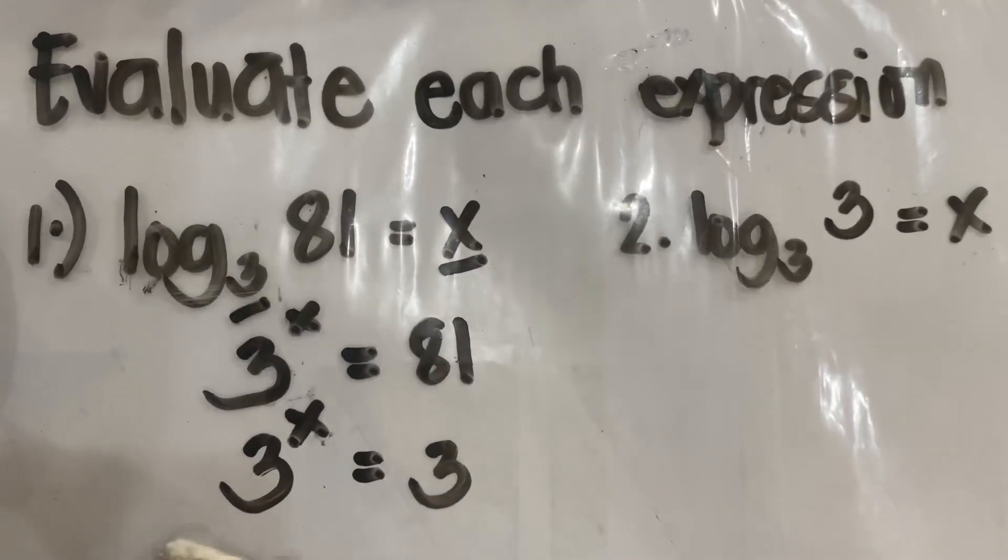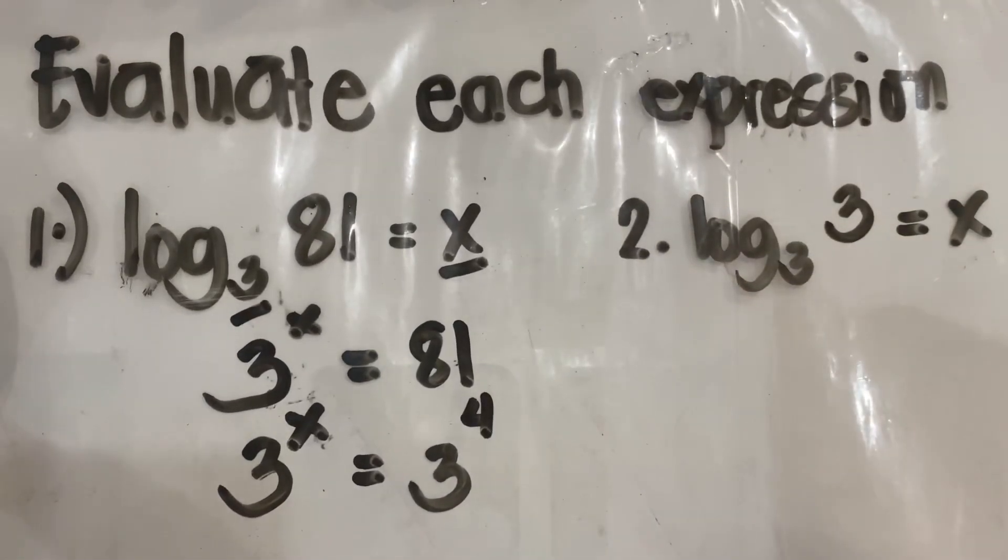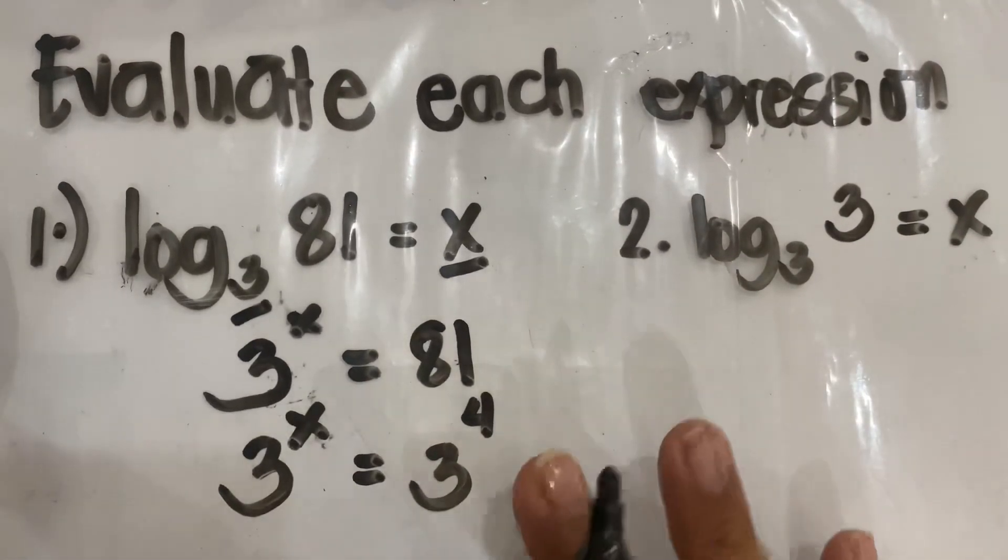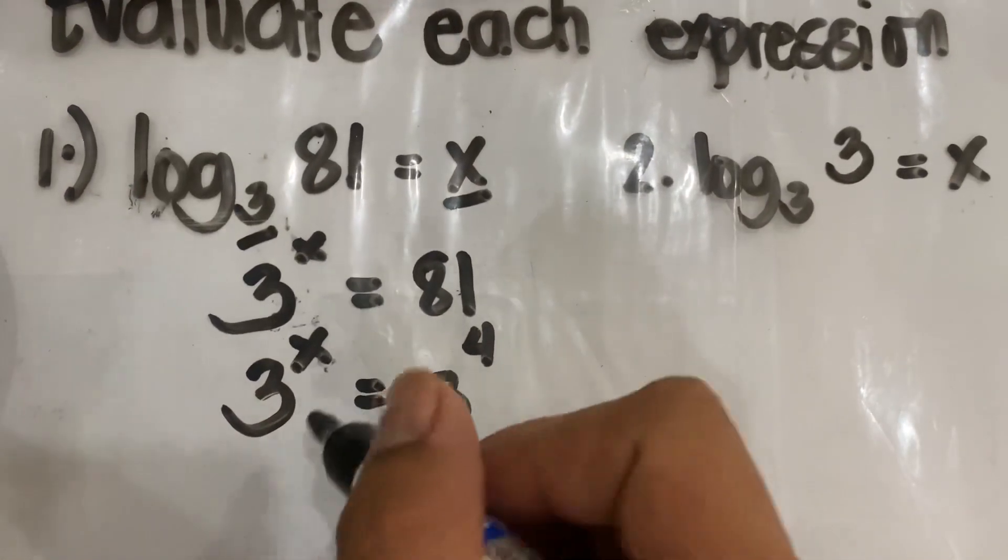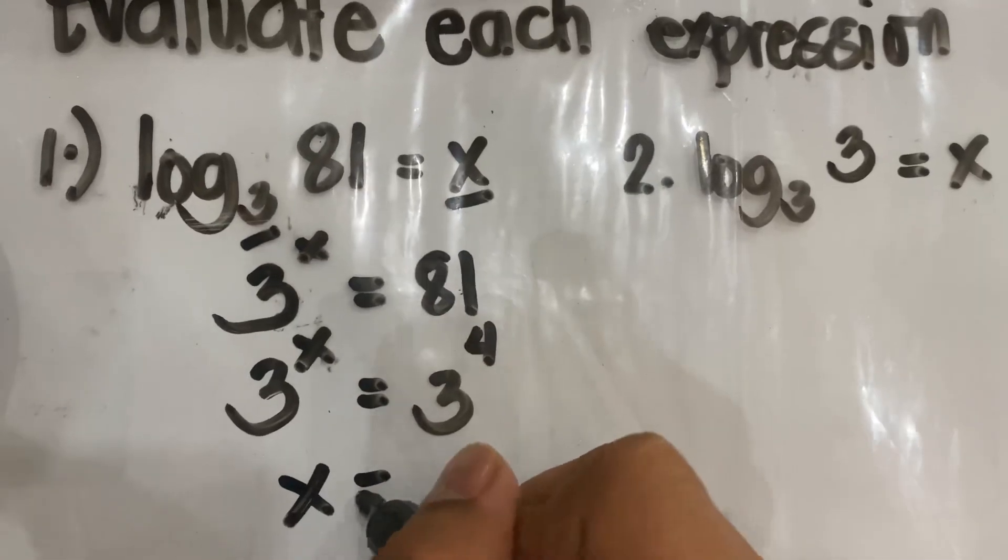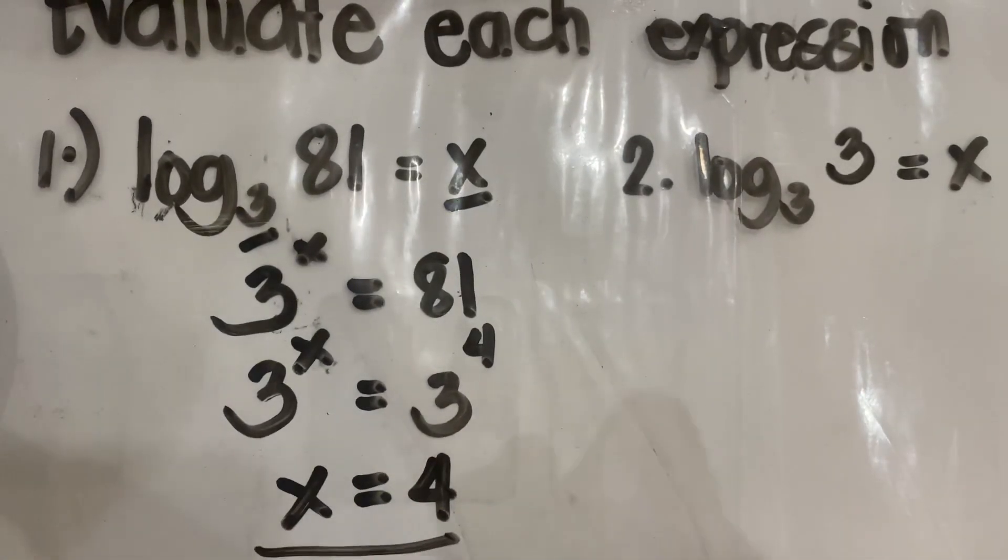Okay, so therefore, we have here 3 to the power of 4. Thus, since they have already the same base, what you need to do is you can equate the exponent. Thus, your x is equal to 4. Okay, so that's for the first one.